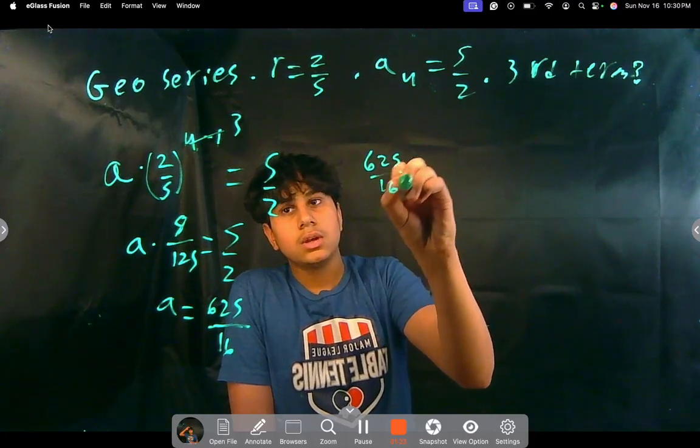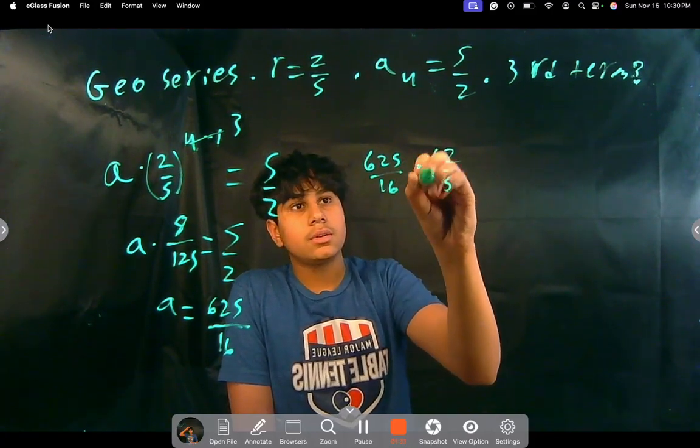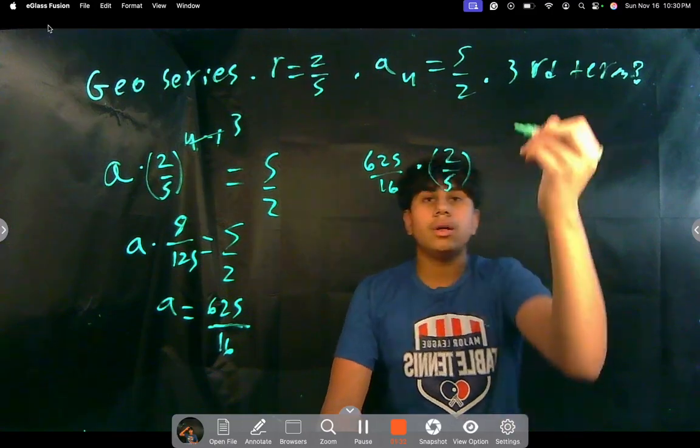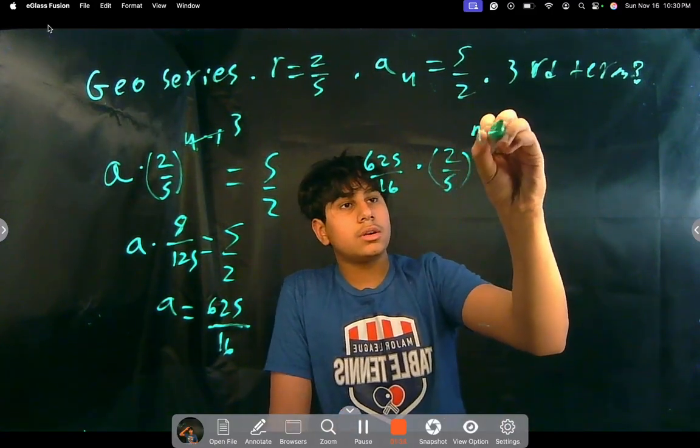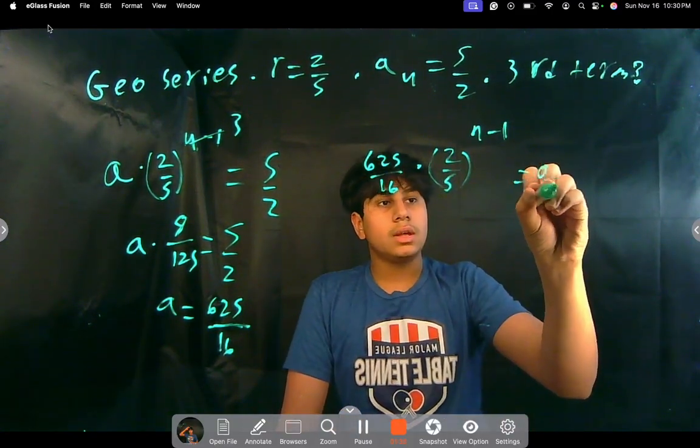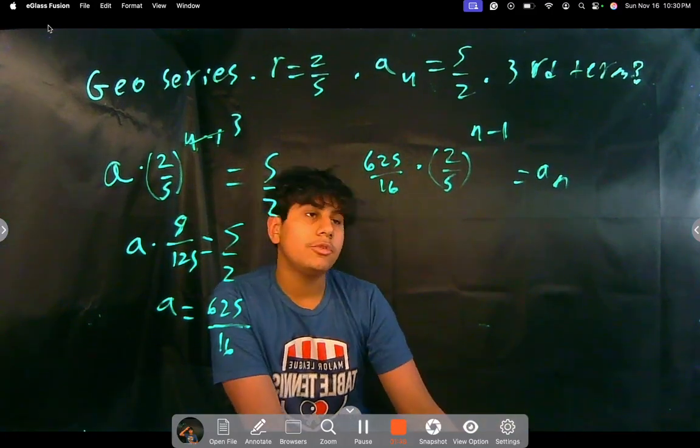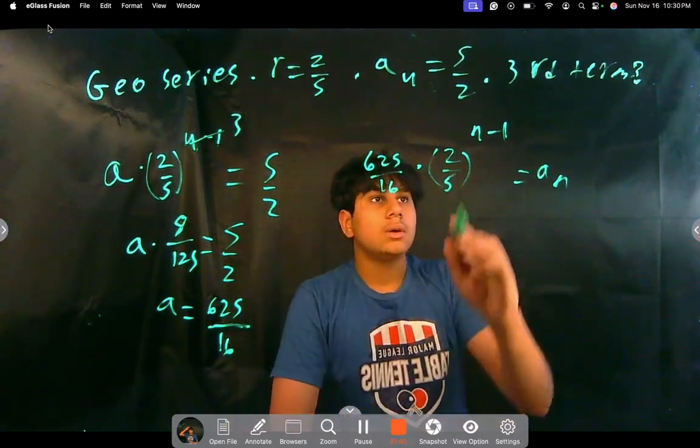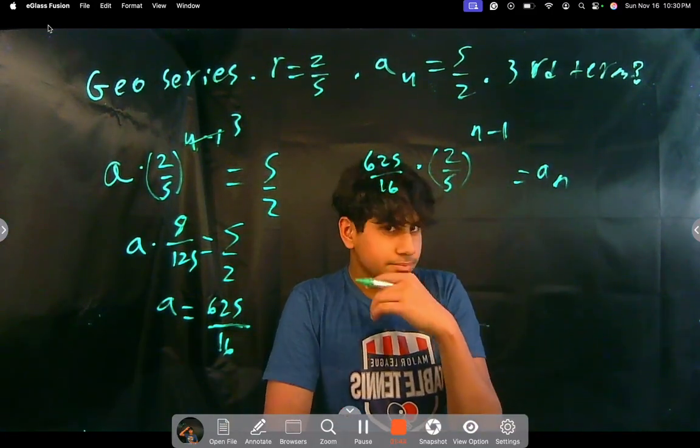625 over 16 times 2 over 5 to the power of—well, now we have a generic equation. n minus 1 equals aₙ. So now, if we want to find the third term, we have our rule.